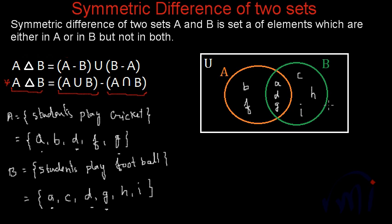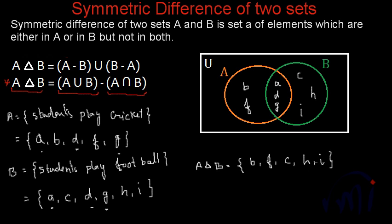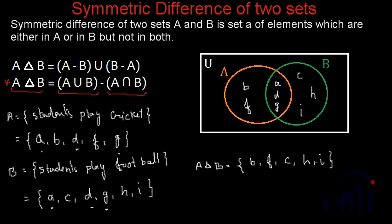The symmetric difference A△B is the set of all elements either in A or in B but not in both, so A△B = {B, F, C, H, I}. This is the set of all students who play either cricket or football but not both games — students who play only one game.